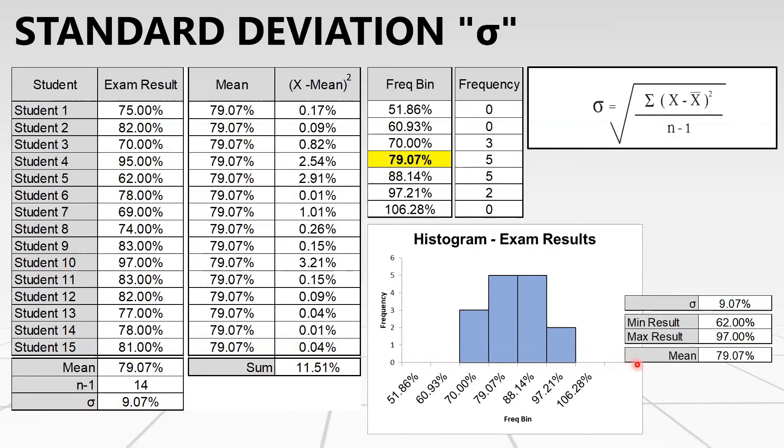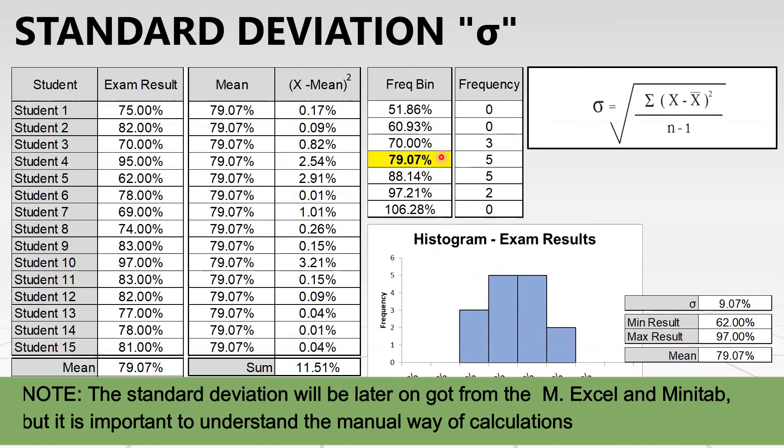To draw my x-axis in the histogram, I need first to plot my table with the frequency bin and the frequency. I will start with my mean, which I calculated was 79.07%. Remember that in Six Sigma, we always have three standard deviations after the mean and three standard deviations before the mean. The intervals represented by the standard deviation will be 51.8% to 60.9% to 70% to 79%, and the difference between each data, which is known as the interval, is the standard deviation of 9.07%.